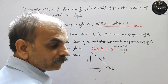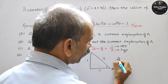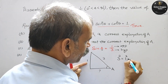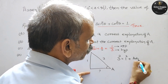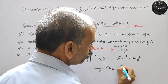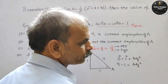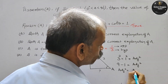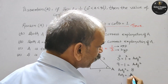यह निकालना है पहले. तो देखो क्या होगा? Hypotenuse square, that means 3² = 1² + adjacent². 1 को इस side में लेकर आजाओ, तो यह हो जाएगा: 9 minus 1 = adjacent square. तो adjacent square is equal to 8, तो adjacent is √8.